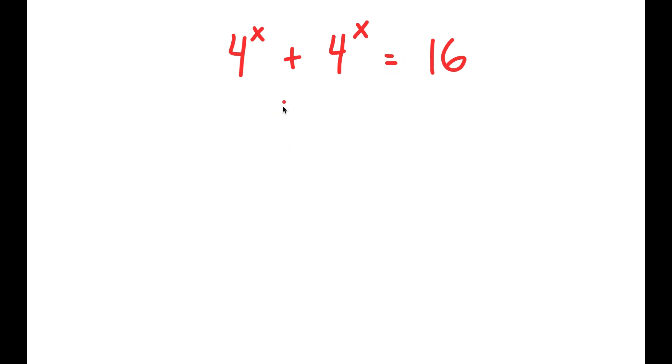So to solve this, I'm going to first start by factoring out 4 to the power of x from my left-hand side. So I get 4 to the power of x times 1 plus 1 is equal to 16. And this turns out to be 4 to the power of x times 2 is equal to 16.